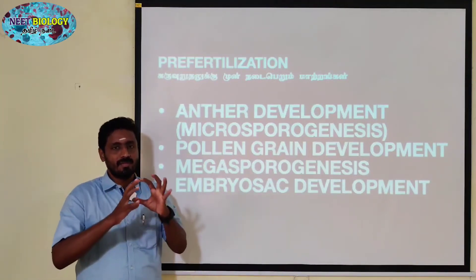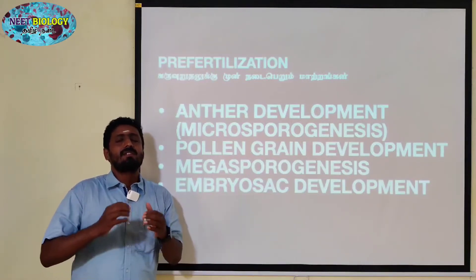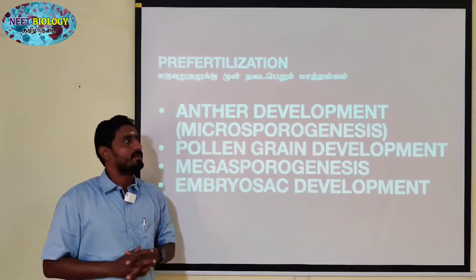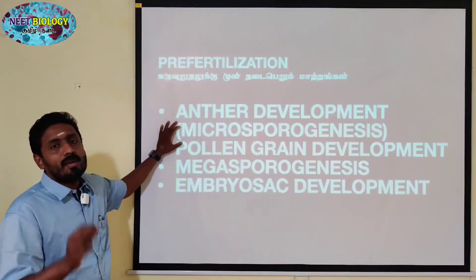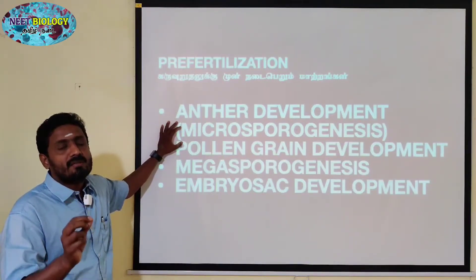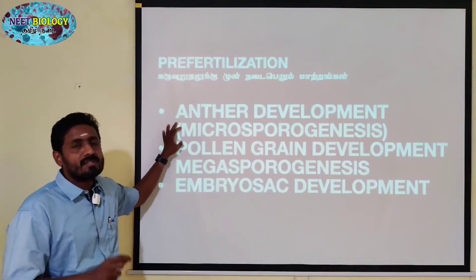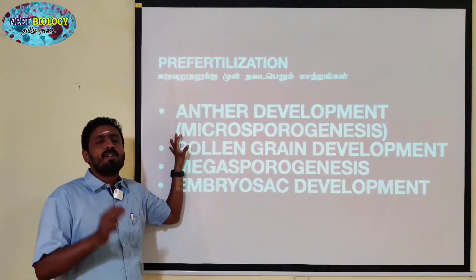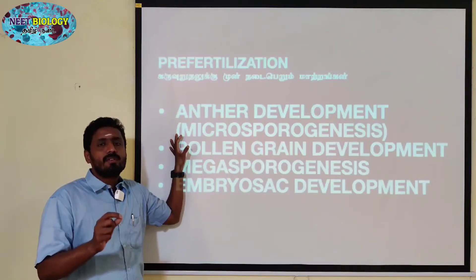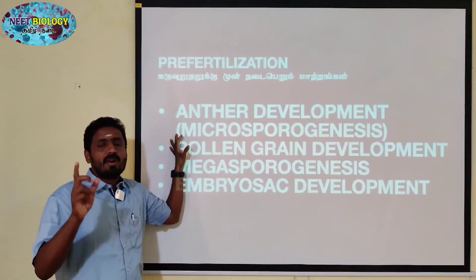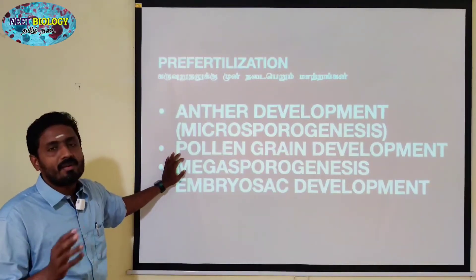This is a sequence of reactions — anther development. The formation of microspores is called Microsporogenesis. In English, Microsporogenesis is called Nune Vithical formation, which refers to pollen grain development.